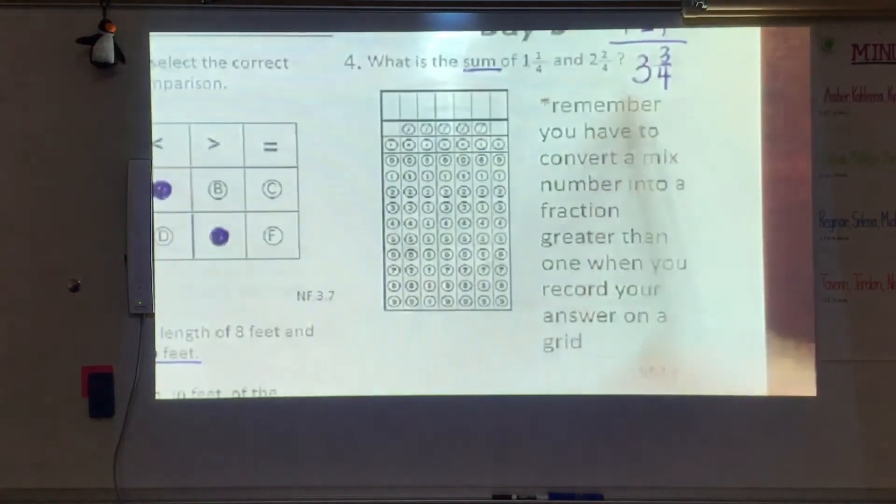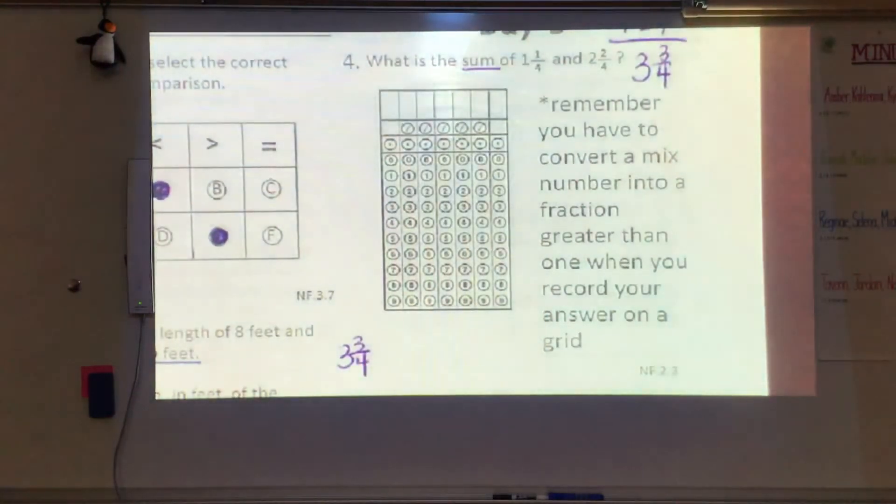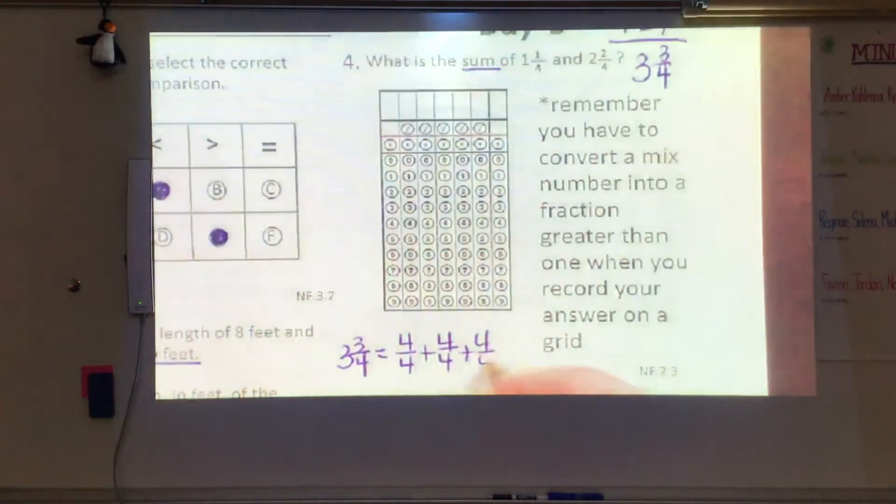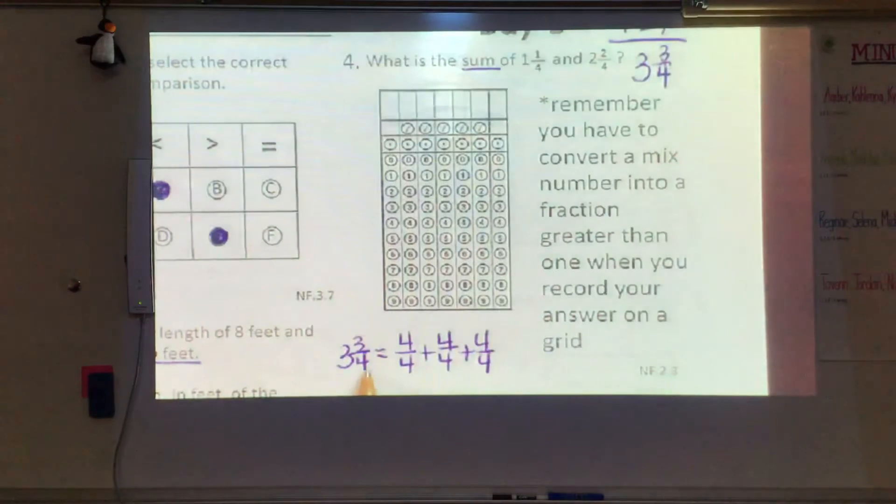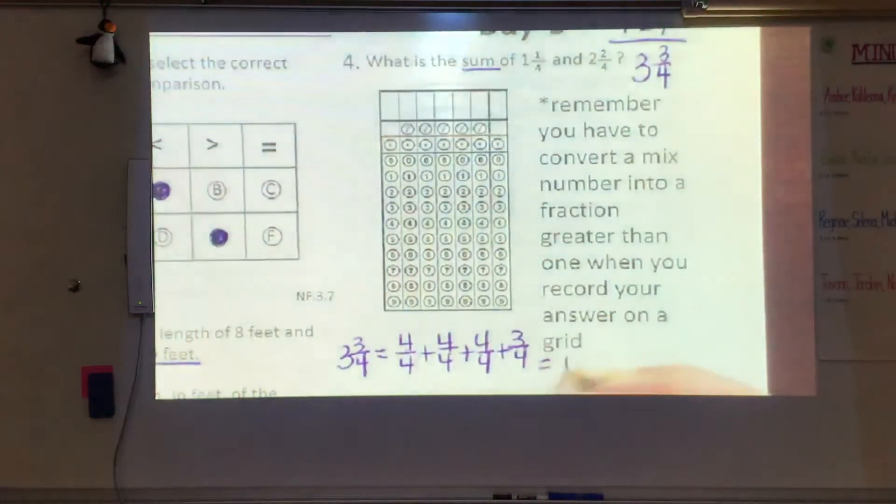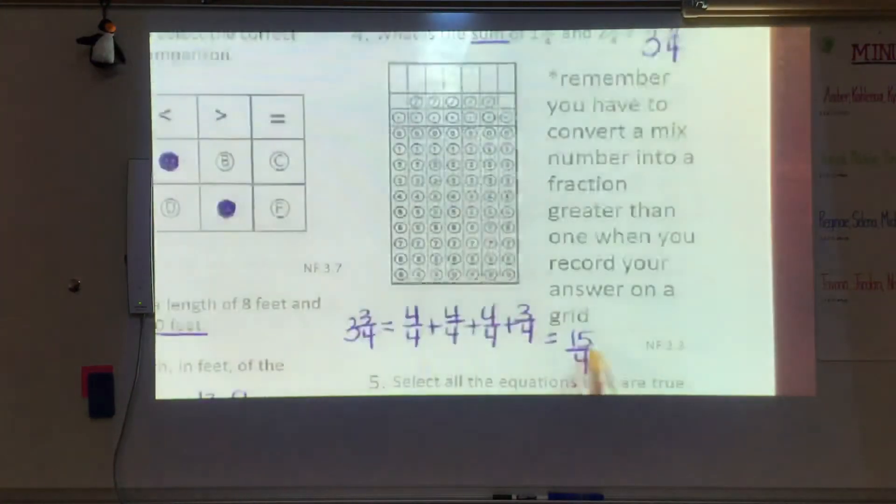So I'm going to come down here and write this because I'm kind of running out of room up there. And we're going to do it like this. We're going to do 3 wholes, which is 4/4 plus 4/4 plus 4/4. And then we're going to add our 3/4. So now I have 4/4, 8/4, 12/4 plus 3 more would be 15/4. And that is a fraction greater than one, 15/4.